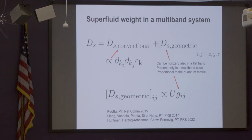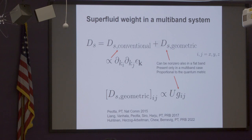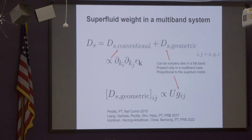We found out that there is what everybody knew — a conventional contribution, which is proportional to the dispersion of the band. However, there is another contribution which only exists in a multi-band system when you really take into account the other bands explicitly. It can be non-zero also in a flat band, unlike the conventional one. Moreover, we call it geometric because at certain limits it becomes simply the interaction times the quantum metric.